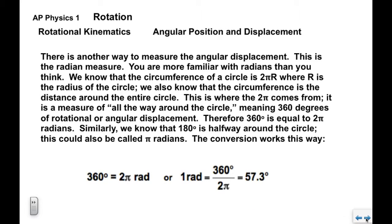There is another way to measure angular displacement: the radian measure. You're actually more familiar with radians than you think. We know that the circumference of a circle is 2πr, where r is the radius, and the circumference is the distance all the way around the circle. This is where 2π comes from — it's a measure of 360 degrees of angular displacement, so 360 degrees equals 2π radians.